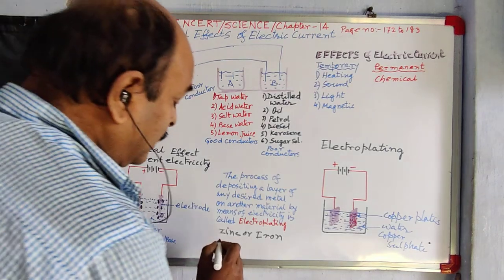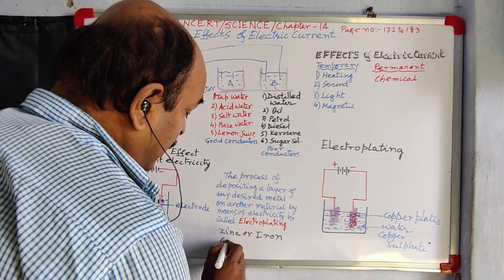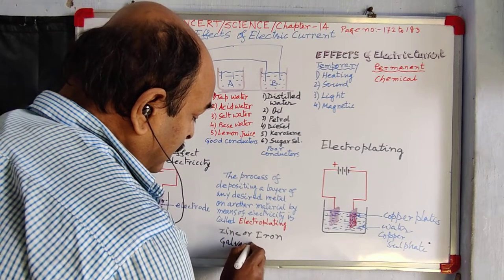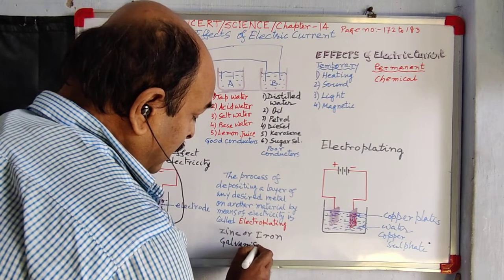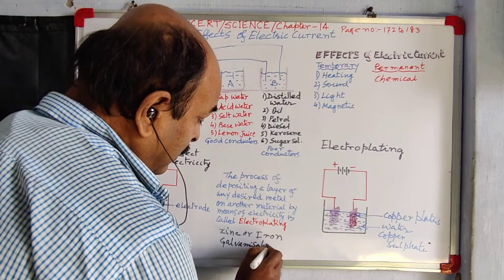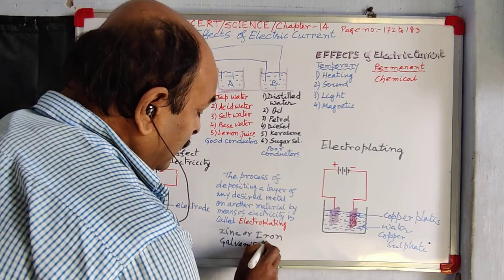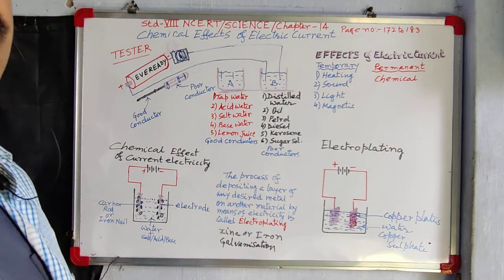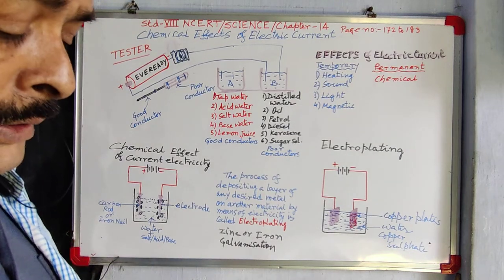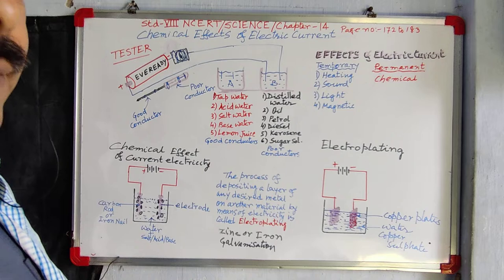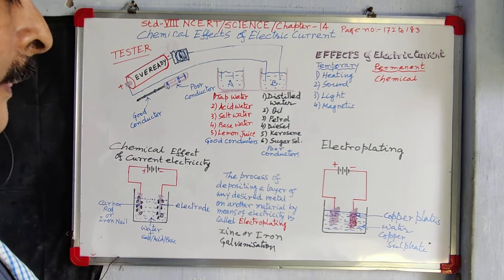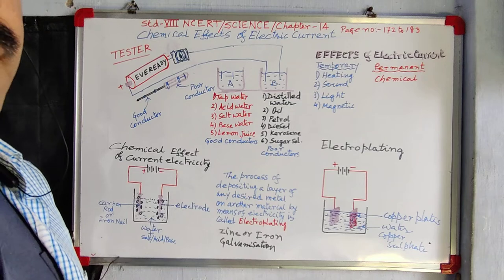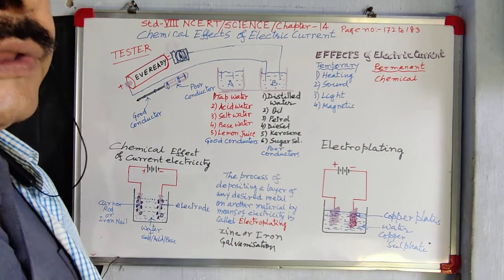This method is called galvanization — G-A-L-V-A-N-I-Z-A-T-I-O-N. And this iron is called galvanized iron. You might have heard about galvanized iron — galvanized iron means iron electroplated with zinc.